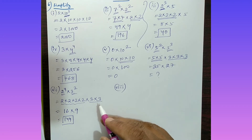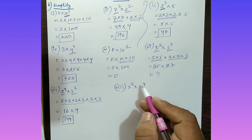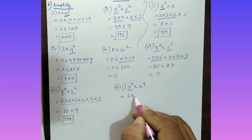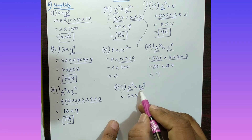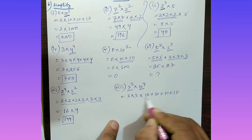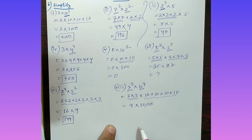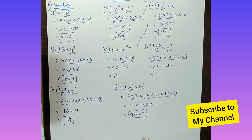Part (viii): Simplify 3 square into 10 to the power 4. Three squared means 3 is multiplied 2 times: 3 into 3, which is 9. Ten to the power 4 means 10 is multiplied 4 times: 10 into 10 into 10 into 10, which is 10,000. So 9 multiplied by 10,000 gives 90,000. Question number 6 is complete.